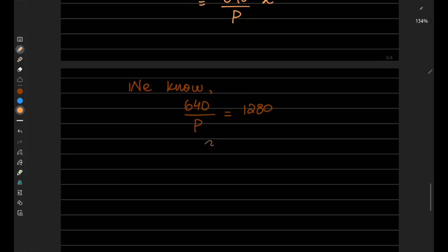So from here, getting the value of p: p will be equals to 640/1280.